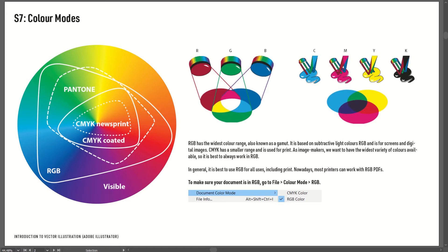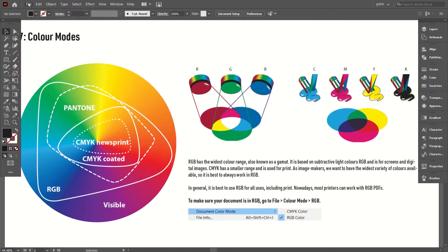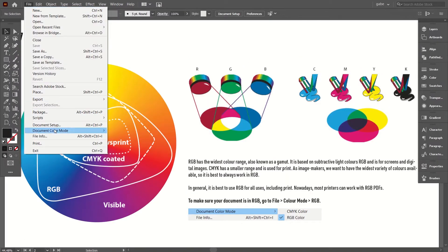Before we learn about exporting for screen and print, we should talk a little bit about color modes. In general, it's best to use RGB for all uses, including print. Nowadays, most printers can work with RGB PDFs. To make sure your document is in RGB, all you have to do is go to File and set it to RGB Color.